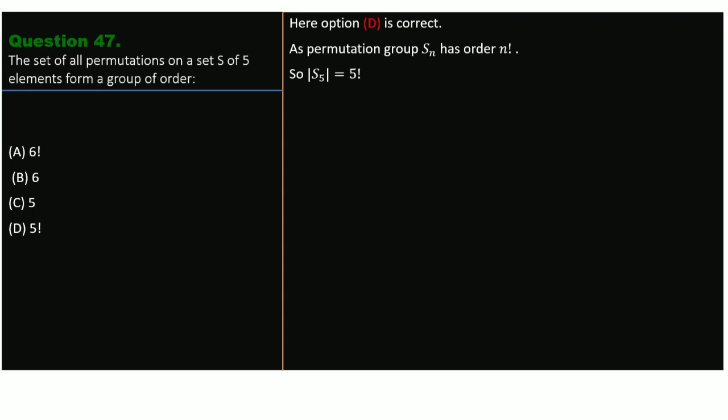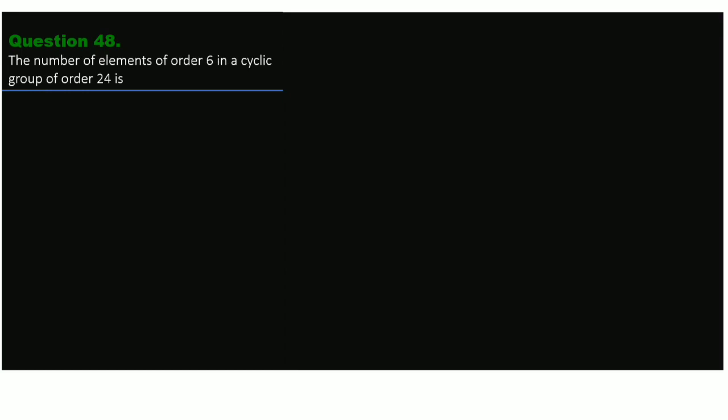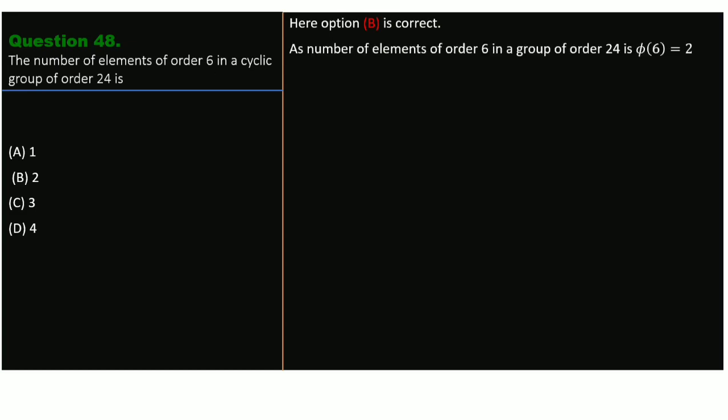Question 48. The number of elements of order 6 in a cyclic group of order 24 is how much? Options are 1, 2, 3, and 4. The correct option is B, that is 2. The number of elements of order 6 in a cyclic group of order 24 is φ(6) = 2, where φ is Euler's phi function.